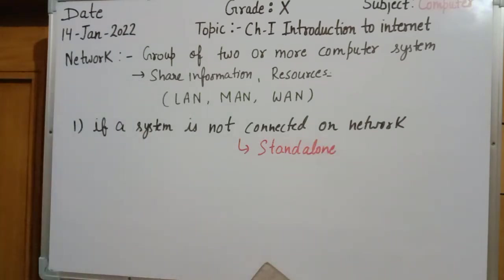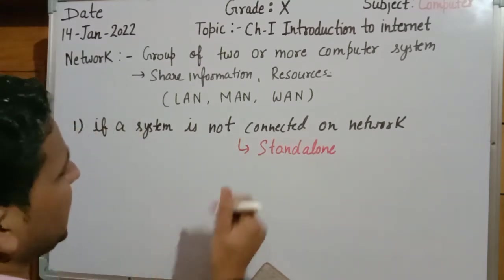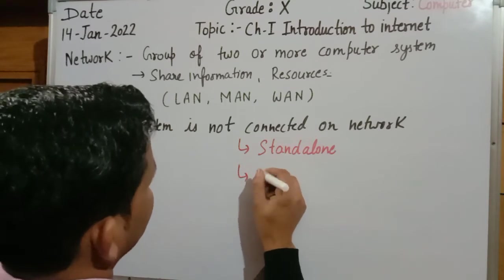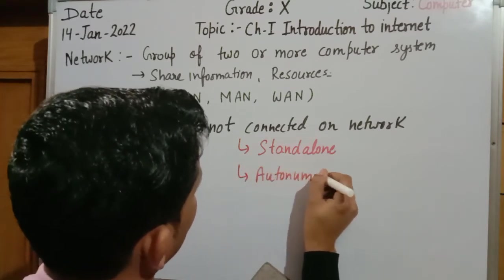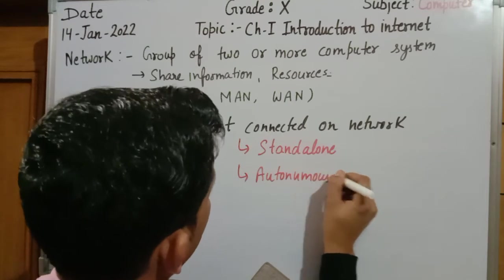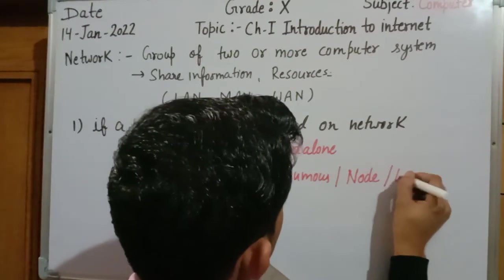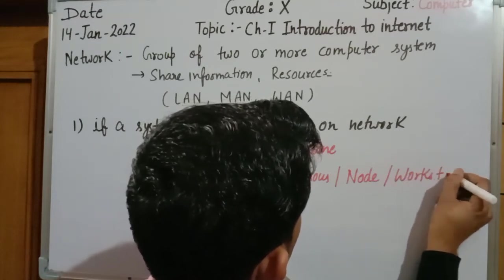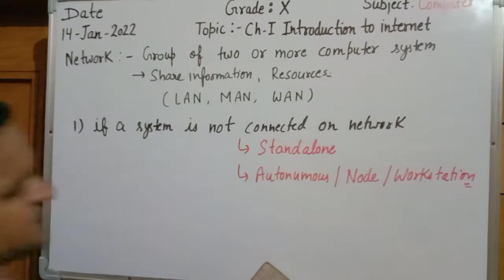Now, which system is connected on the network? A system that is connected on the network can also be known as autonomous, or it can also be known as a node, or also as a workstation — which is connected on the network and can share information.